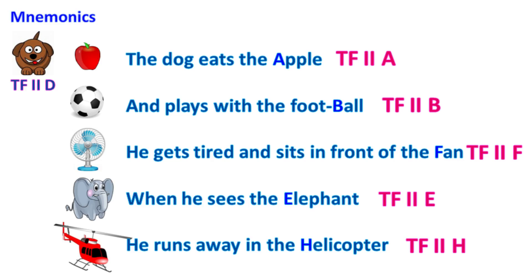We can remember the events of transcription initiation with the following mnemonic: The dog eats the apple and plays with the football. He gets tired and sits in front of the fan. When he sees an elephant, he runs away in the helicopter. This corresponds to TF2D, TF2A, TF2B, TF2F, TF2E, and TF2H.